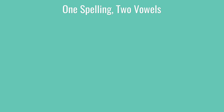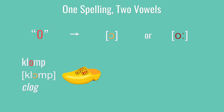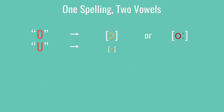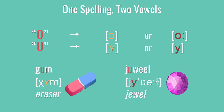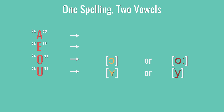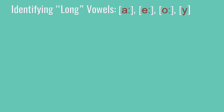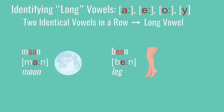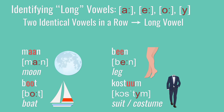So now let's talk about vowels. Many vowels in Dutch have one spelling that can produce two possible vowel sounds. For instance, the spelling o — for Dutch words that produces o as in klomp or o as in stro. Or the spelling u — that can produce o as in geum or u as in juweel. Dutch tends to classify its vowels into two categories: the so-called short vowels, as in a, e, o, u, and the so-called long vowels, a, e, o, u.